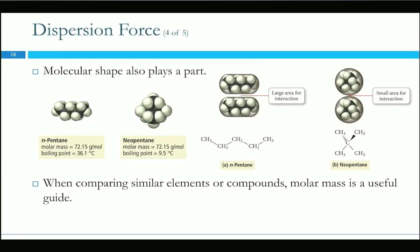Shape also affects dispersion forces — anything that has a larger area of interaction generally has a higher boiling point. Longer molecules generally have higher boiling points than more spherical ones because they interact over a larger area. Like glue on just one finger versus glue over your entire hand touching a surface — the whole hand has attraction over the entire surface area. Even though n-pentane and neopentane are the same mass, n-pentane (a straight chain) has a higher boiling point than neopentane (tetrahedral).